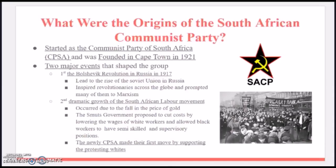So what were the origins of the South African Communist Party? Well, it started as the Communist Party of South Africa, CPSA, and was founded in Cape Town in 1921. Two major events that shaped the group: first, the Bolshevik Revolution in Russia in 1917, which led to the rise of the Soviet Union and inspired revolutionaries across the globe, such as the CPSA, and prompted many of them to Marxism — which is basically the basis for the theory and practice of communism.